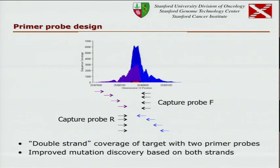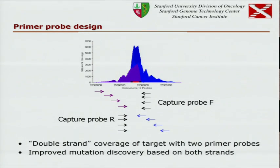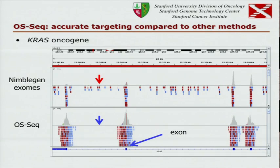If you want double-stranded, you can place a capture probe upstream and downstream of the position you're targeting. Then you get reads from both — the purple distribution is for one of the probes, the blue is for the other, and the sum of the two is shown.